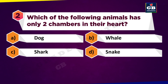Which of the following animals has only two chambers in their heart? A. Dog, B. Whale, C. Shark, D. Snake.